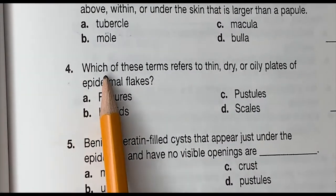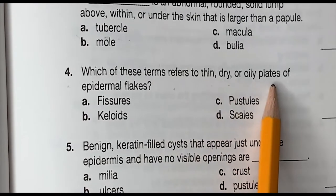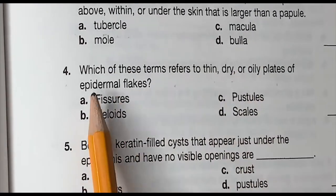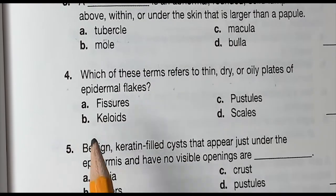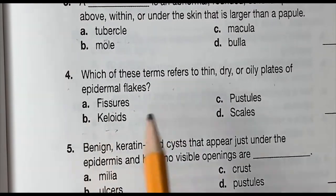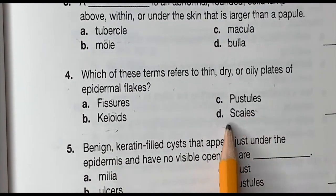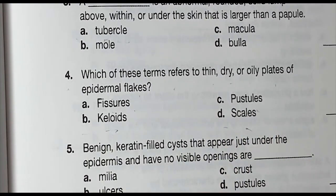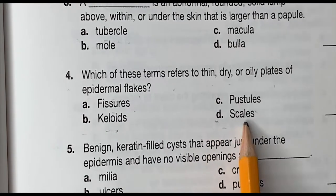Question 4: Which of these terms refers to thin, dry, or oily plates of the epidermal skin flakes? Is it A, fistules. B, keloids. C, pustules. Or D, scales. And the correct answer is D, scales.